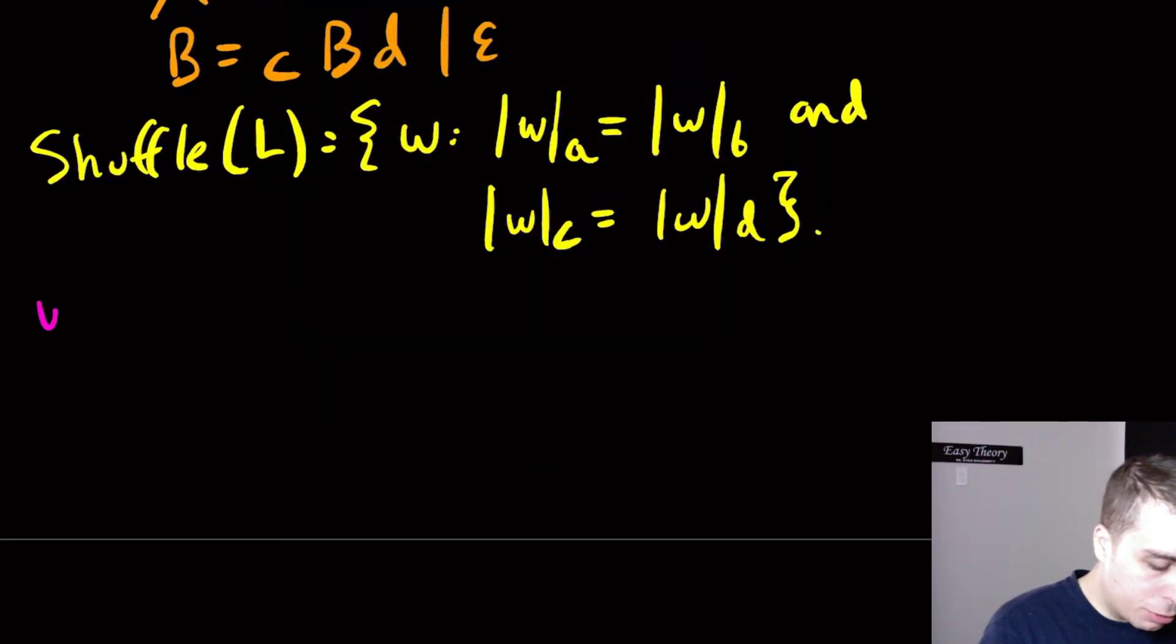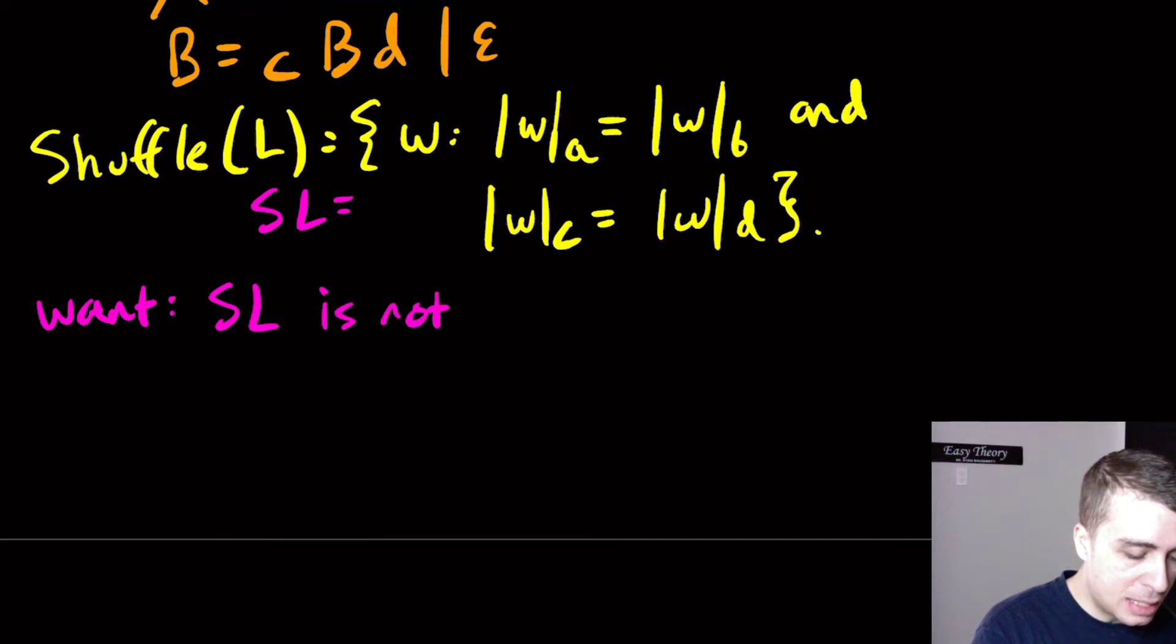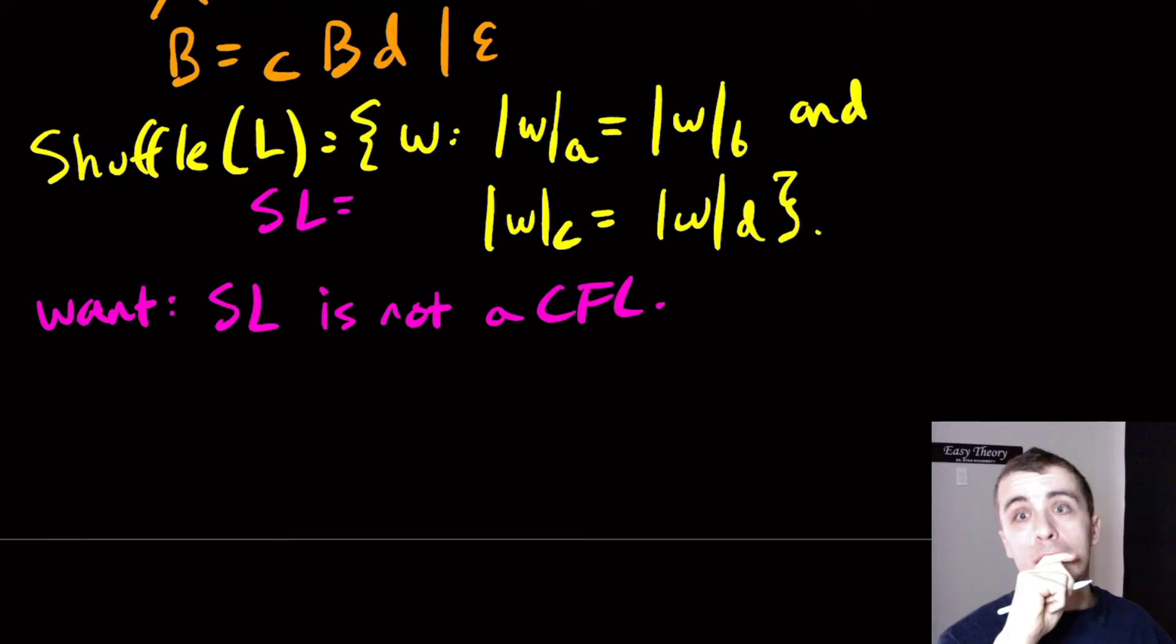What I want to do is, I'm going to call this language SL because I don't want to write shuffle of L every time. I want to show that SL is not a CFL.